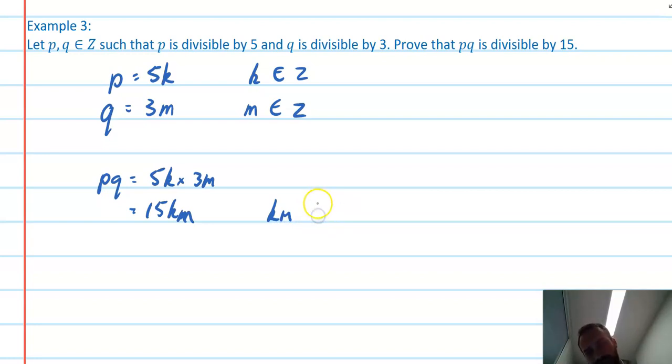So pq = 5k × 3m = 15km. Let km equal n, and n is clearly an integer, because k and m were integers. Therefore, 15n done. Therefore, pq divisible by 15. Easy.